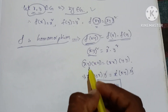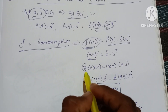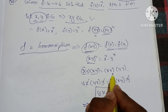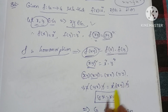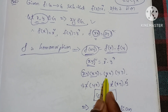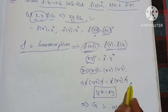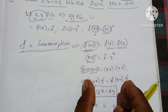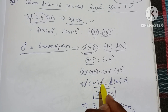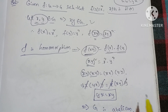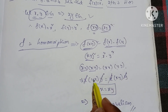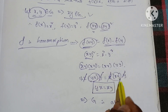So, (xy)² = xy·xy, and x² = x·x, y² = y·y. Therefore x·yx·y = x·xy·y. Applying left cancellation law on x and right cancellation law on y, we get yx = xy.